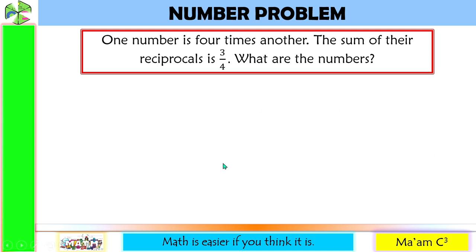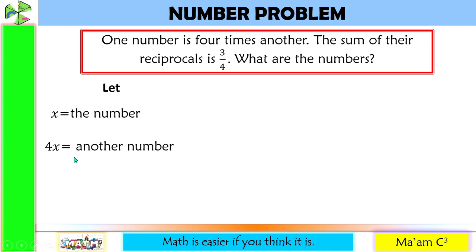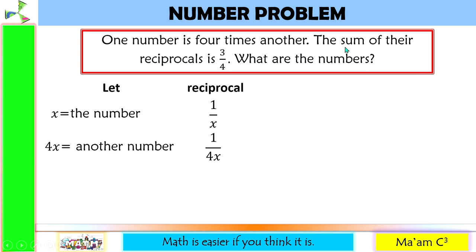First, we're going to let x be our number. Another number is four times x, so 4x is equal to another number. Since we are talking about reciprocals, the reciprocal of x is 1 over x, and the reciprocal of 4x is 1 over 4x. The sum of the reciprocals gives us 1 over x plus 1 over 4x, equated to 3 over 4.